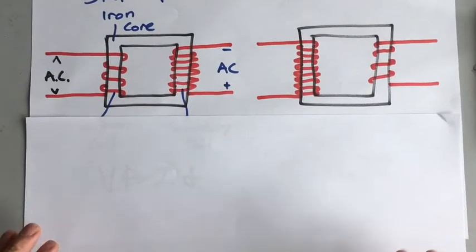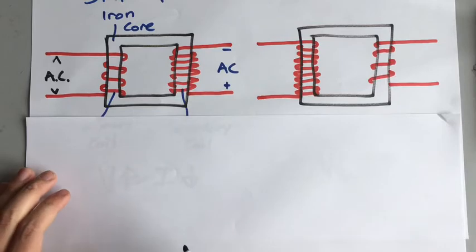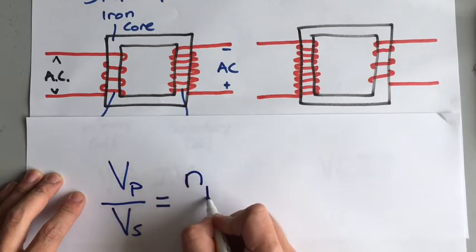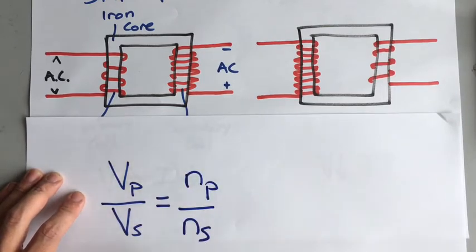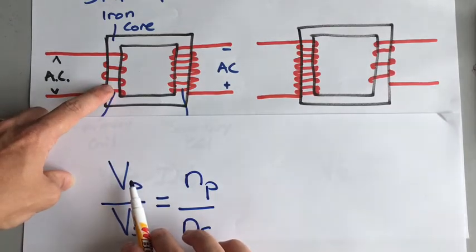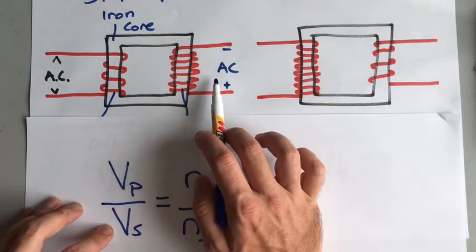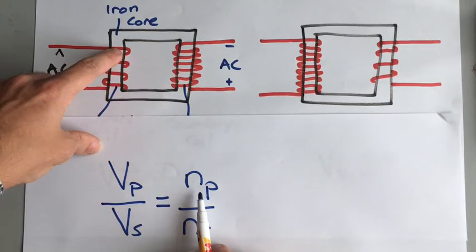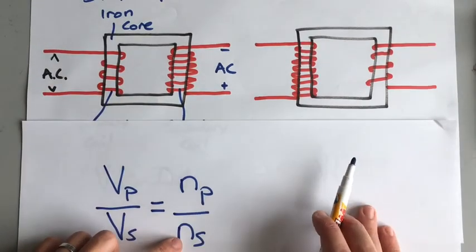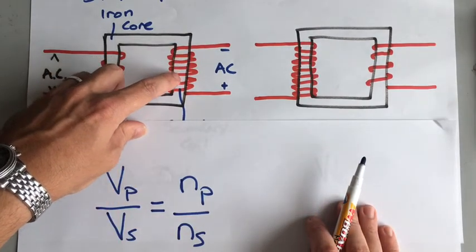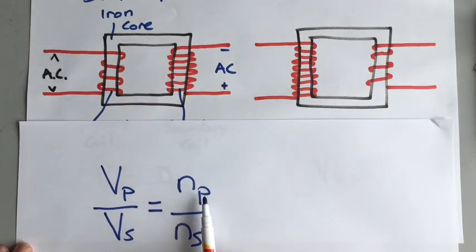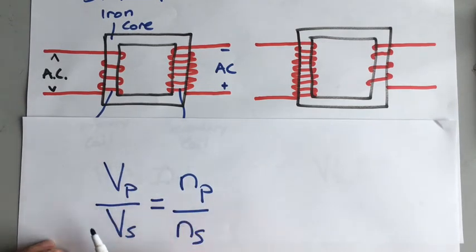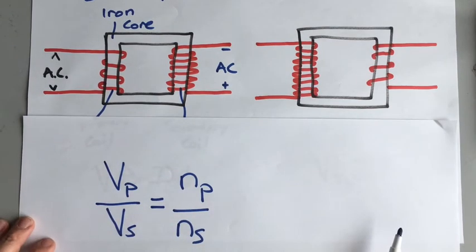There is a way of calculating exactly what effect the number of turns has, and that's with this equation. The voltage going to the primary coil divided by the voltage going to the secondary coil equals the number of turns on the primary coil divided by the number of turns on the secondary coil. In this case the primary coil has 4 turns and the secondary coil has 7 turns, so the ratio of turns on the primary to the secondary is 4 to 7, and that would be the same ratio as the voltage. This equation is useful for working out exactly how much the voltage is going to change.